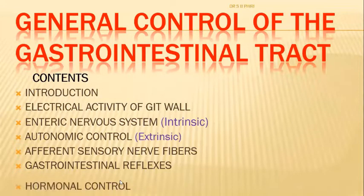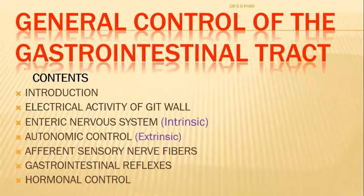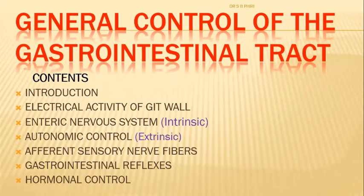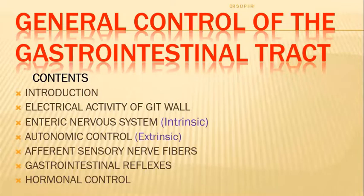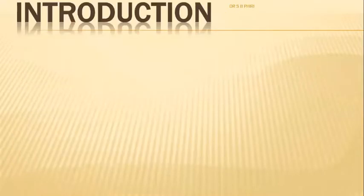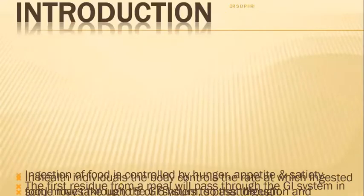Towards the end we'll discuss hormonal control - there are also hormones that have an effect on the function of the GIT. These hormones could be produced by the structures of the GIT itself or come from elsewhere to affect GIT function. So there is hormonal control of the gastrointestinal tract system.